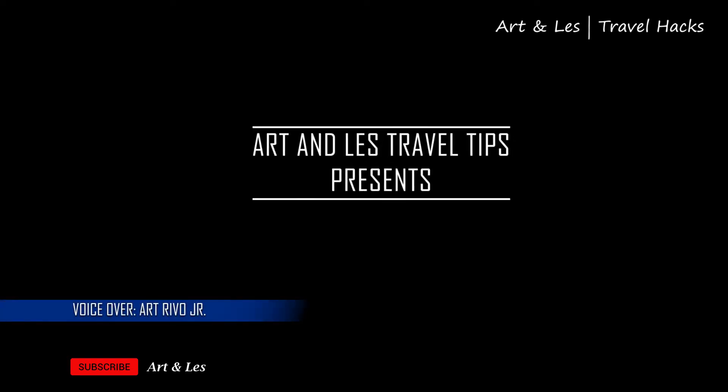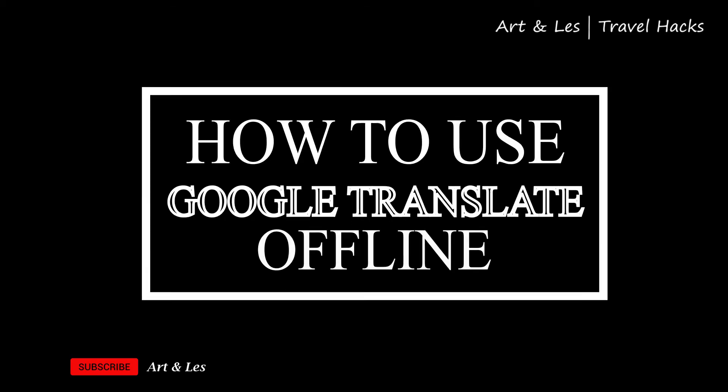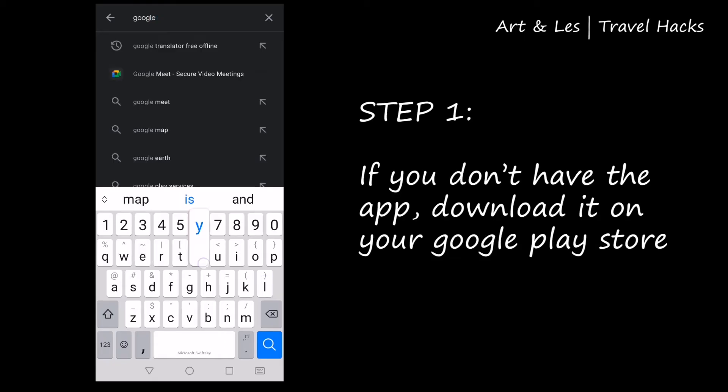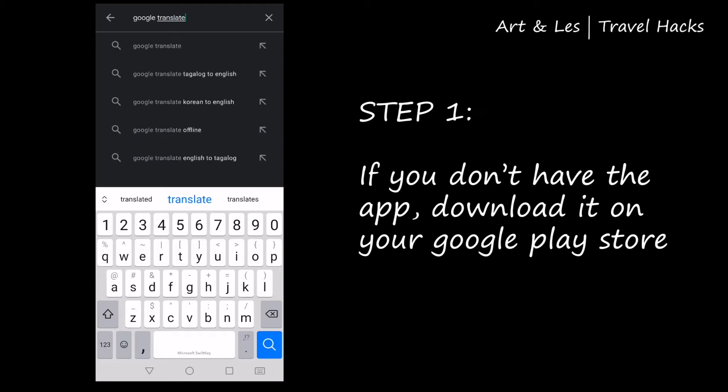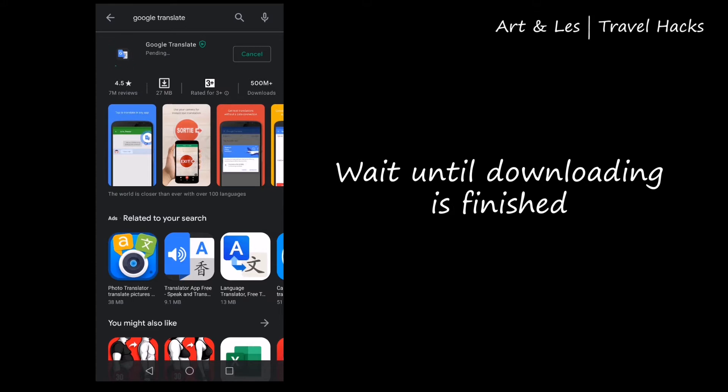Hello guys, welcome back to our channel. This is Art, and I'm excited to share with you another travel hack — this is how to use Google Translate offline. The first step is to download the Google Translate application on your Google Play Store. Wait until your download is finished.